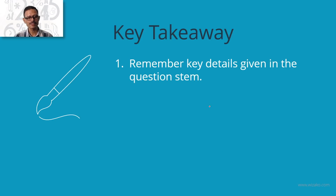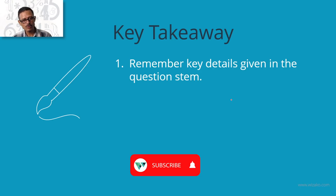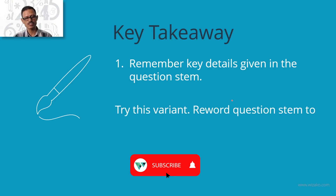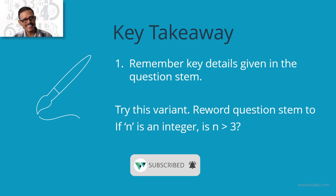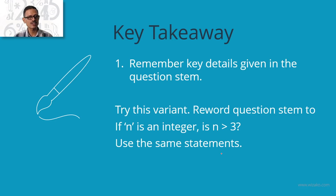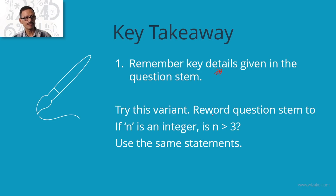Key takeaway: always remember key details given in the question stem. As a variant, try changing the question stem from 'n is a positive integer' to 'n is an integer' while keeping the same statements — you'll realize how much difference that key detail makes to the answer.